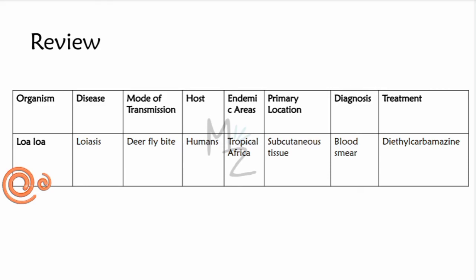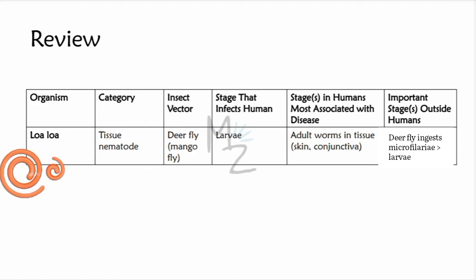To review: the organism is Loa Loa, a filarial worm responsible for causing Loiasis. Mode of transmission is by the bite of the deer fly. Definitive hosts are human beings; intermediate hosts are deer flies. Endemic areas are tropical Africa. Primary location is the subcutaneous tissue. Diagnosis is made by visualization of microfilariae in a blood smear. Treatment is diethylcarbamazine and surgical excision. Category is tissue nematode; insect vector is the deer fly or mango fly, genus Chrysops. The infective stage in humans is the third stage larvae. The stage most associated with disease is adult worms in the tissue, skin, and conjunctiva. The deer fly ingests microfilariae and introduces infective larvae into the human body.